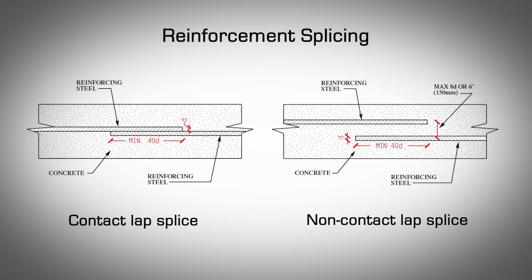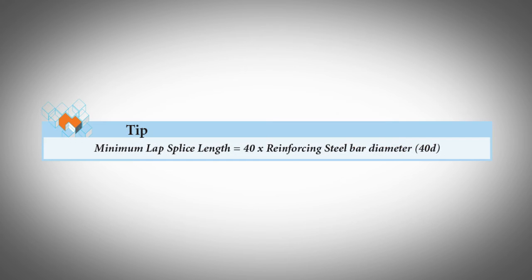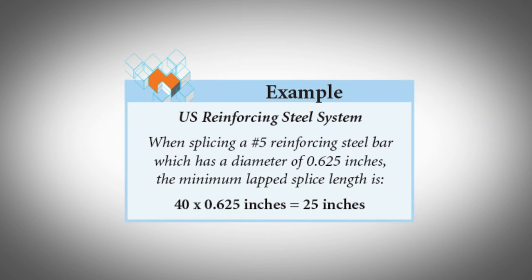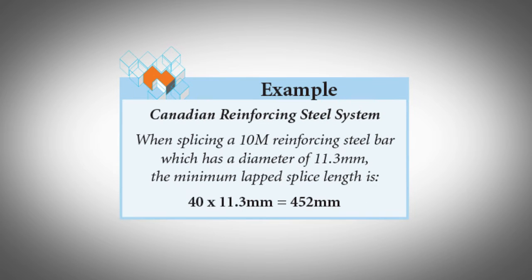Minimum Requirement for Lap Splice Length. Both types of lap splices have a minimum splice length requirement: the minimum lap splice length equals 40 times the reinforcing steel bar diameter. When splicing a No. 5 reinforcing steel bar, which has a diameter of 0.625 inches, the minimum lap splice length is 25 inches. When splicing a 10M reinforcing steel bar, which has a diameter of 11.3 millimeters, the minimum lapped splice length is 452 millimeters.